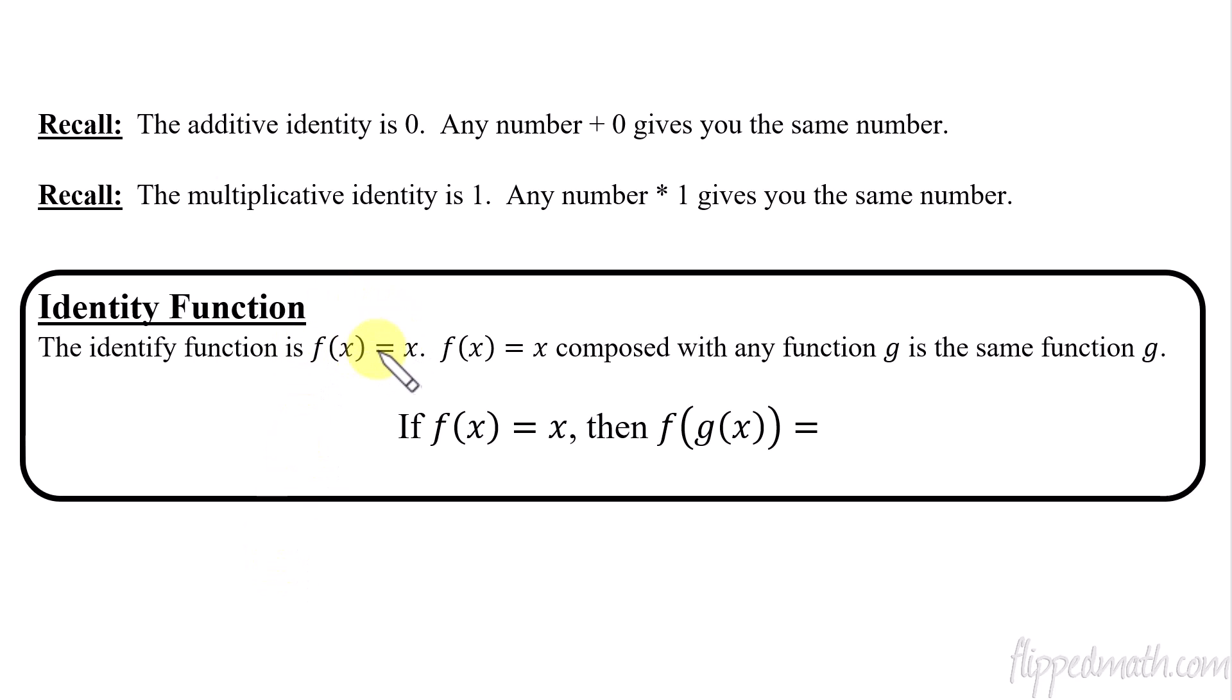There is an identity function that we work with for composing functions. So it's the same idea. If you have a function that is f of x equals x. So if f of x equals x and you compose it with any other function, then you get that function. So here's what that means. If f of x equals x, then f of g of x has to equal g of x. Okay, why? Because if something's getting plugged into the x, if something gets plugged in right there, like g of x, then what does that become? It becomes g of x. So f of x would equal g of x. Okay, that sounds a little confusing. Like I'm confusing myself when I say it.